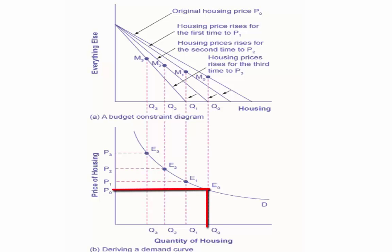and the original quantity of housing, Q0, appear on the demand curve as point E0. The higher price for housing, P1, and the corresponding lower quantity demanded for housing, Q1, appear on the demand curve as point E1.